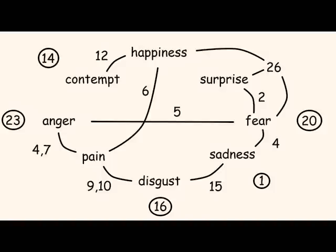For example, happiness is composed of number 12, which is shared with contempt. It means that when you seem to smile, it can be happiness or it can be contempt. There is also number 26, which is the mouth opened. It can also be when you are surprised, not necessarily very happy, or when you fear something.